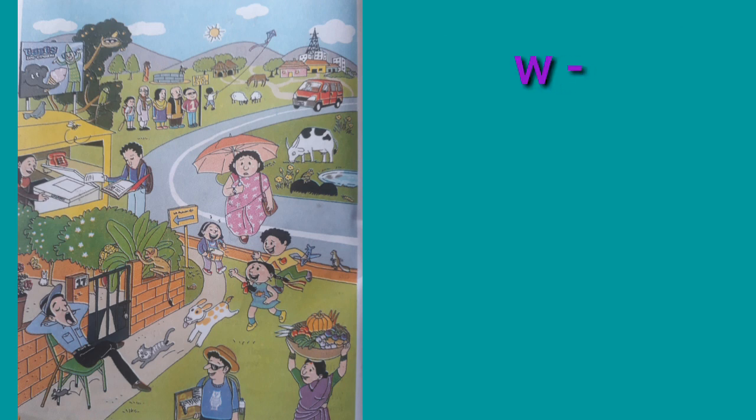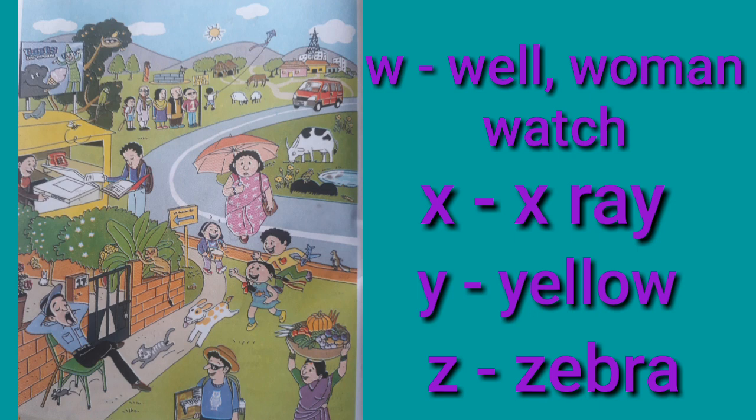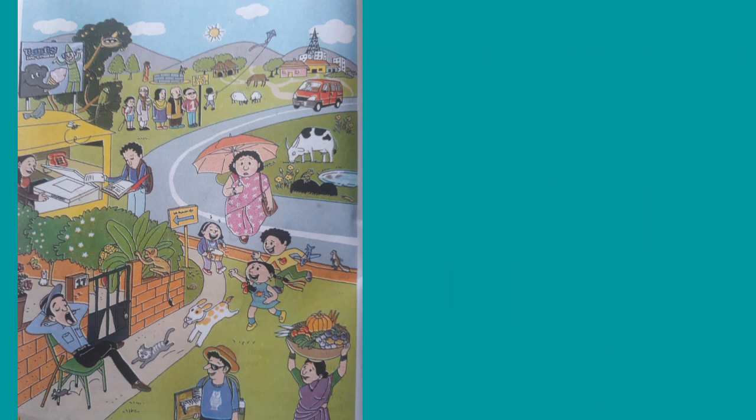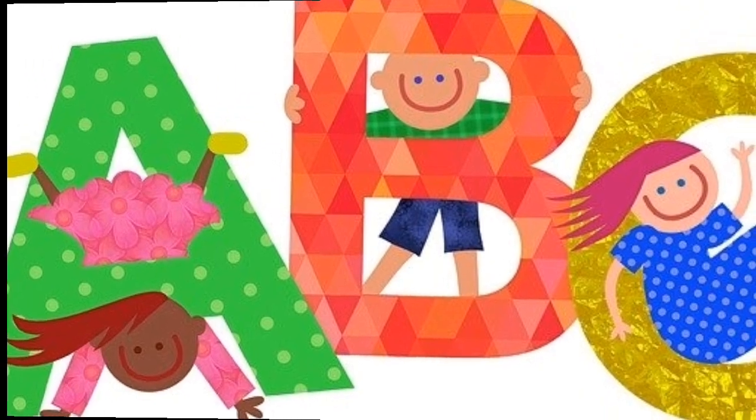From U: Umbrella. From V: Van. From W: Whale, Woman, Watch. From X: X-Ray. From Y: Yellow. From Z: Zebra. Using the pause button you can write all the words easily.